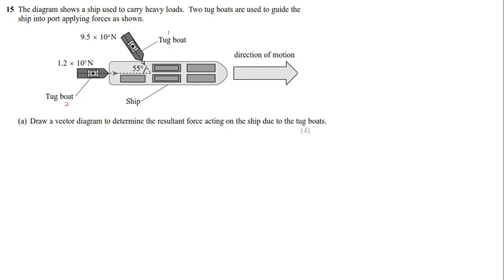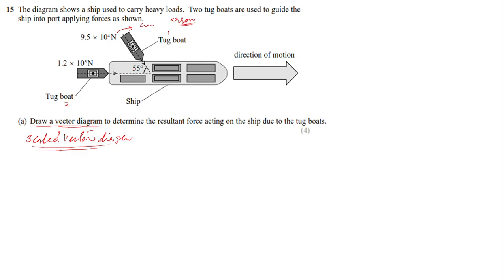The question asks you to draw a vector diagram to determine the resultant force on the ship due to the tugboats. Whenever they ask you to draw vector diagrams, they generally expect a scaled vector diagram. This means you need to convert the given vectors — in this case forces in newtons — into centimeters, so you can draw arrows with equivalent length.